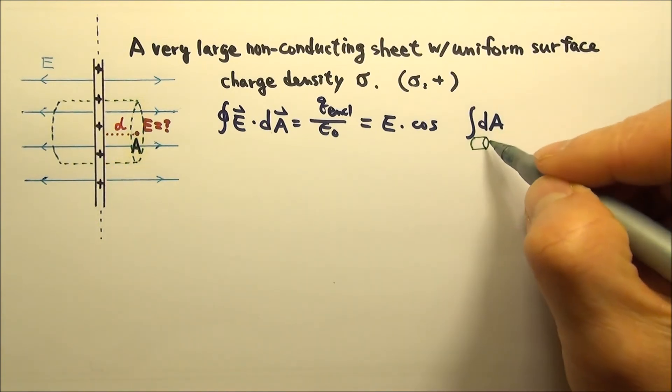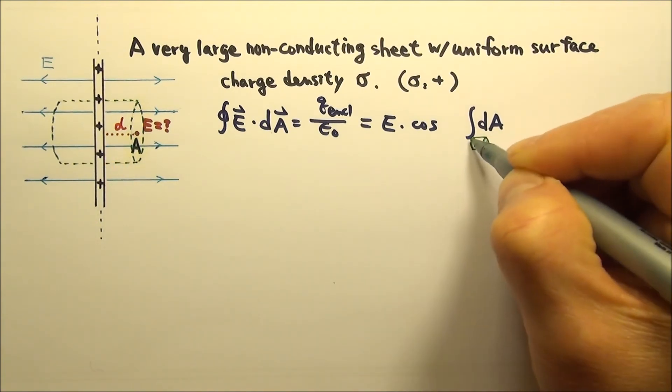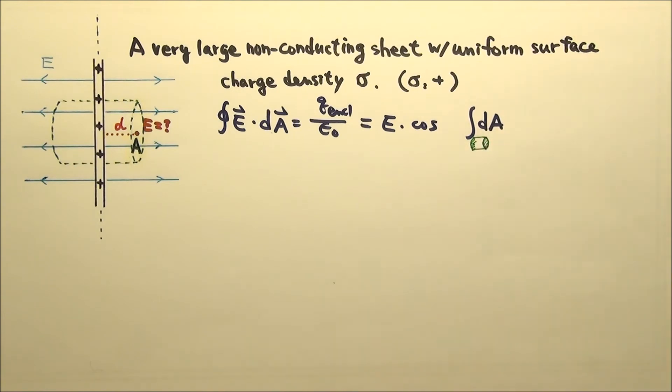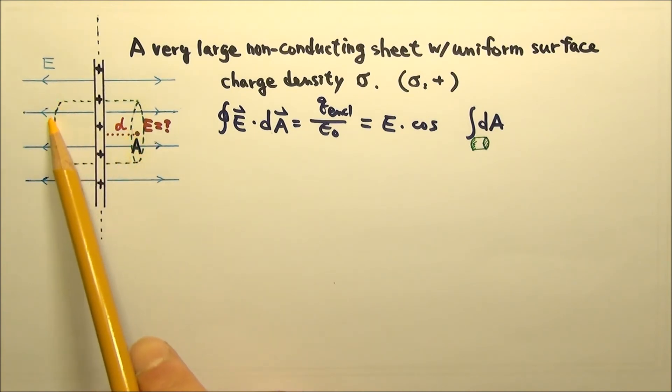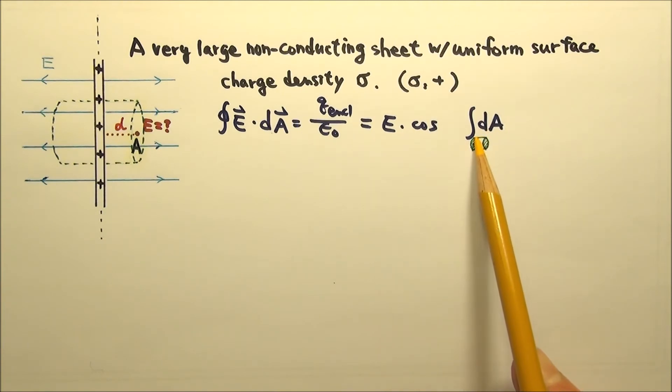This means that we only have to take care of the two ends of the cylinder when we look for flux. Based on planar symmetry, the electric field has the same magnitude everywhere on the two ends. So we can take E out of the integral.